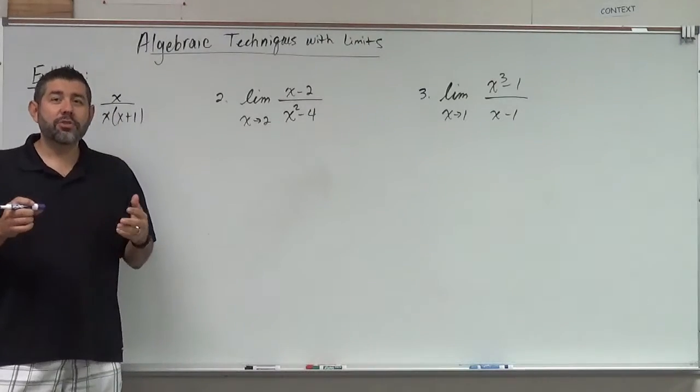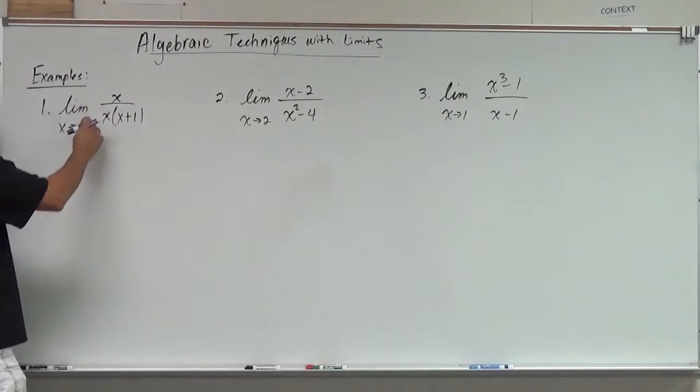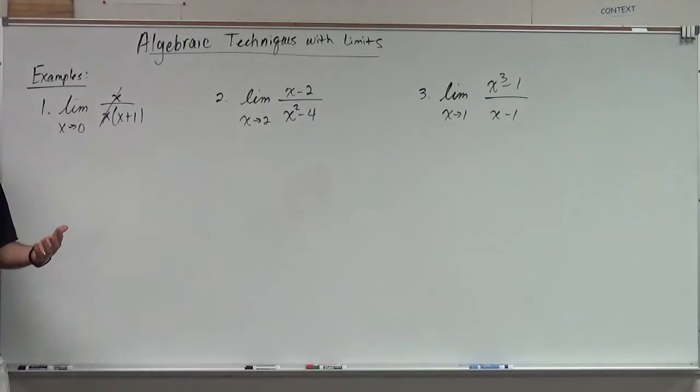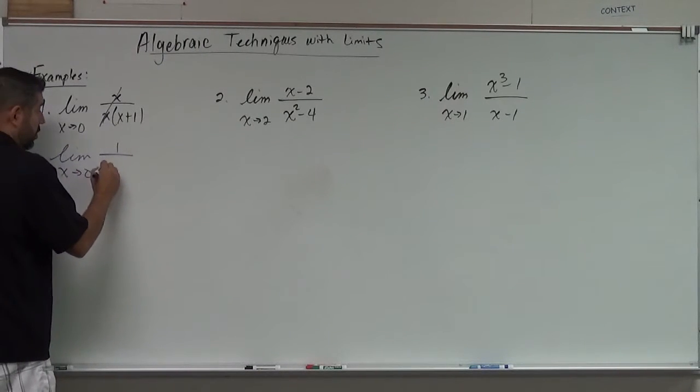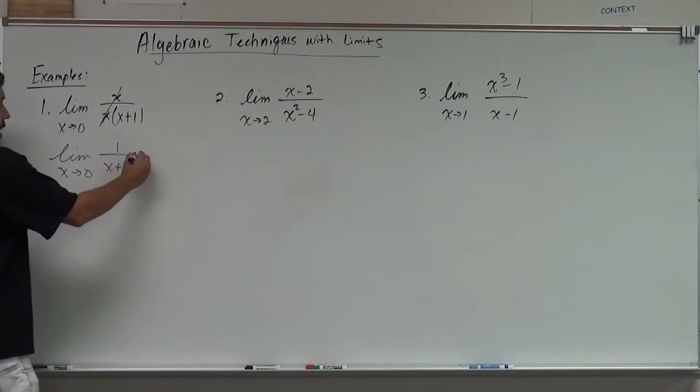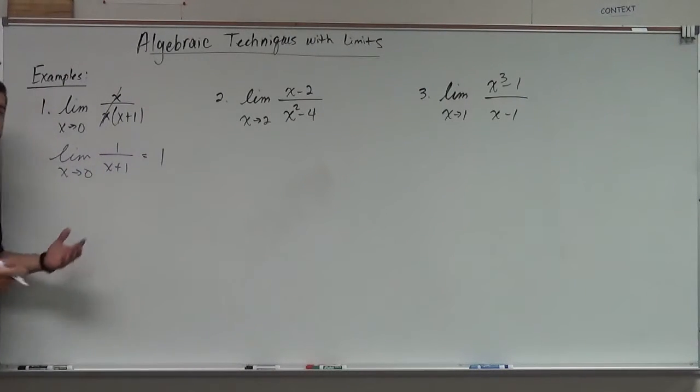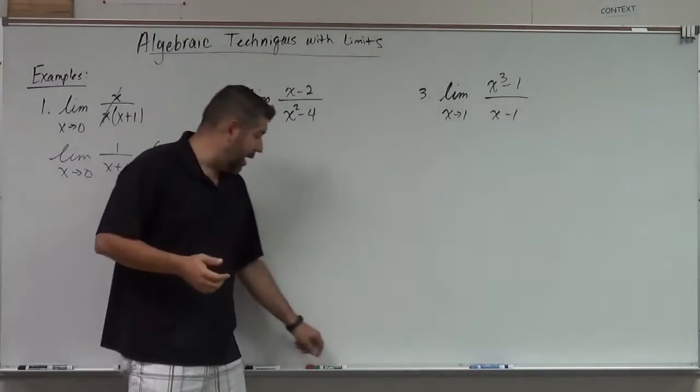What that means is try to simplify whatever you have there. Notice here I can simplify by dropping out the x's, and so I'm going to end up really taking the limit as x approaches zero of x plus one. Now if I plug in zero, I get one over zero plus one, which is one. Boom. Done. That's pretty simple, right? We're using algebra to simplify what we have there.